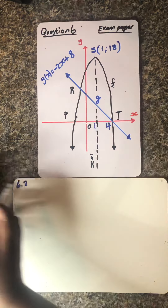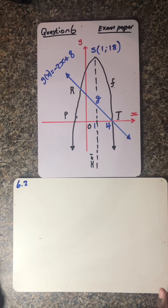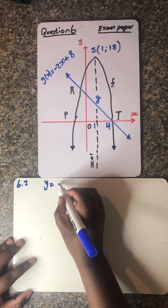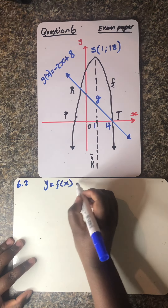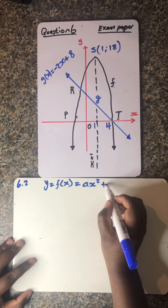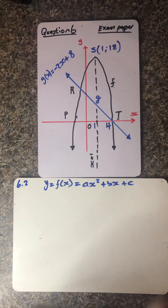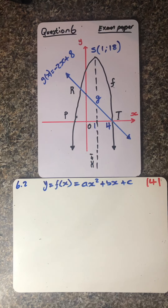So guys, let's determine that graph. It might be a tricky question but let's see. We know they want it in the form of f of x, or let me just say y. y is equals to f of x, which is equals to ax squared plus bx plus c. This question is allocated four marks, which means it's not really that much complicated. You just need to apply your mind, apply the basics that you know.